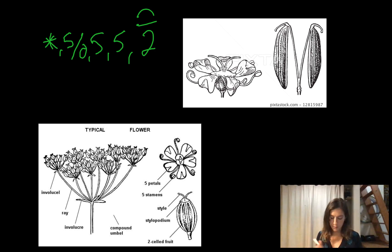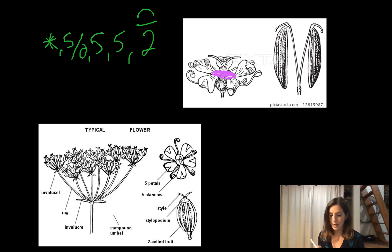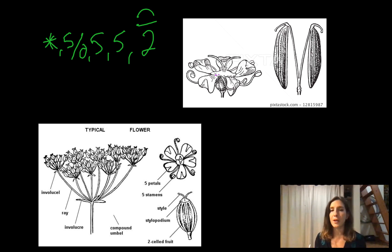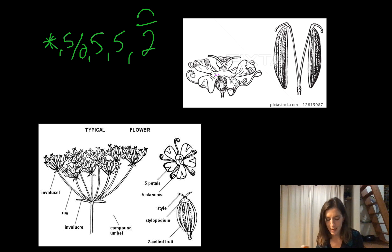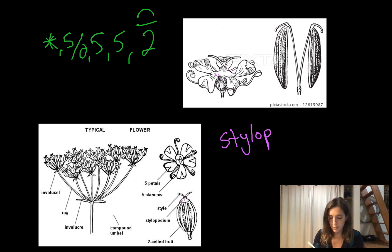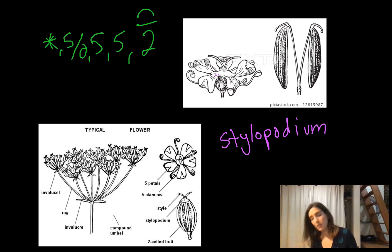Essentially all of the flowers in this family are going to have a stylopodium — right there at the top of the ovary, above the inferior ovary, there's a nectary where nectar is produced. It sort of looks like an inflatable tube or raft sitting right in the middle of the flower. This is a family feature for Apiaceae.